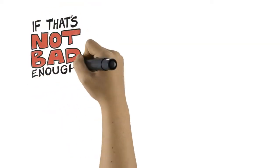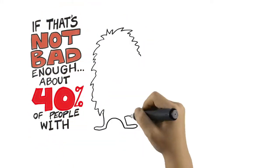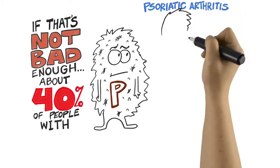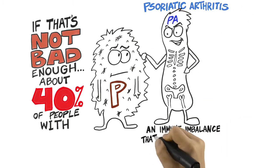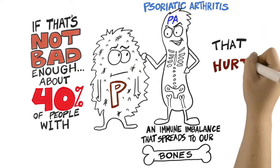If that's not bad enough, about 40% of people with psoriasis will develop psoriatic arthritis, an immune imbalance that spreads to our bones. And that hurts.